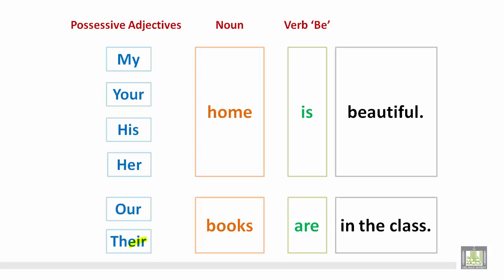So let's look: my, your, his, or her home is beautiful. Or you could say our or their books — since it is plural — are, since it is plural, in the class.